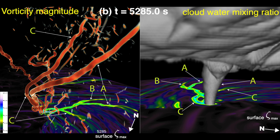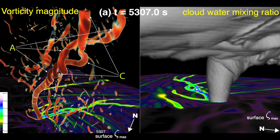Vortex C does a very interesting thing — just as the tornado is starting to really ramp up, it coils into vortex A. It's something I've never seen before and I'm pretty excited about. As you get to these higher-resolution simulations, you start to fully resolve turbulence and pick up things that are quite interesting. The tracks of all these vortices show a lot of merging going on. Vortex C coiling into vortex A is, to me, amazing. I don't think anything like that has ever been observed or seen in models before.